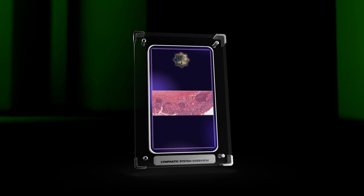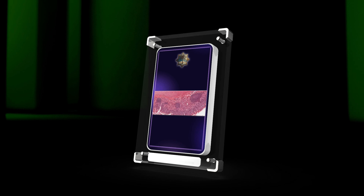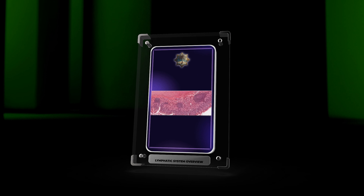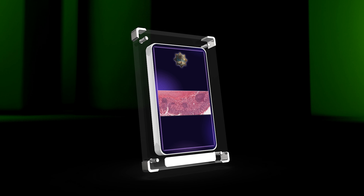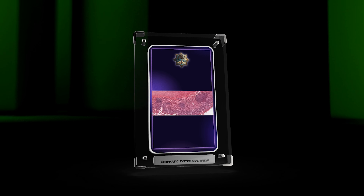The lymphatic system is a complex network of vessels, nodes, and organs that helps maintain tissue balance and fight against infections. This video has provided a detailed overview of its components, functions, and importance in diagnosing and treating related disorders. It is crucial for medical professionals to understand the system in order to improve patient care.